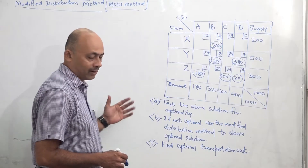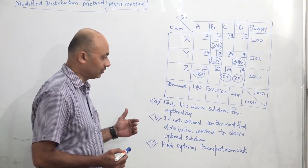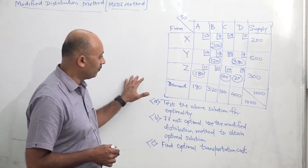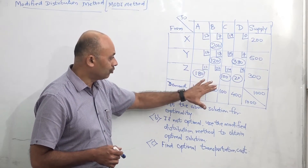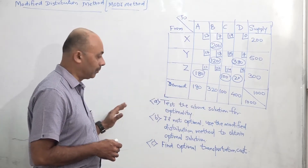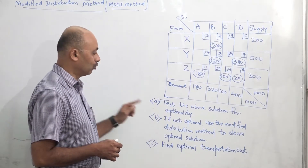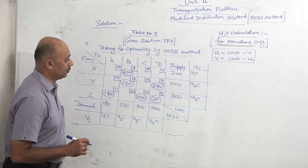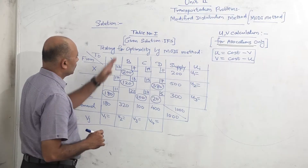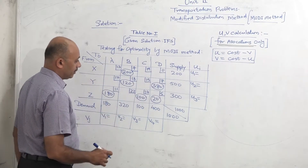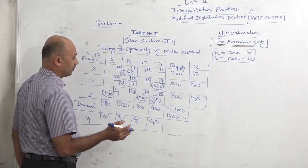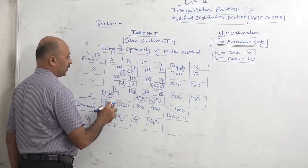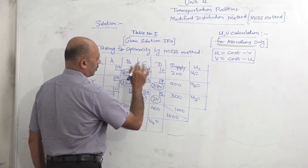In the earlier video, we have seen how to find the IFS, that is the initial feasible solution. This is the next level or next step of that — when the IFS is already given to us, how to test whether it is optimal or not, and if it is not optimal, then how to find the optimal solution. So now we will start with the solution. This is Table 1, which is the same table given in the question. We will start with the Modified Distribution Method.